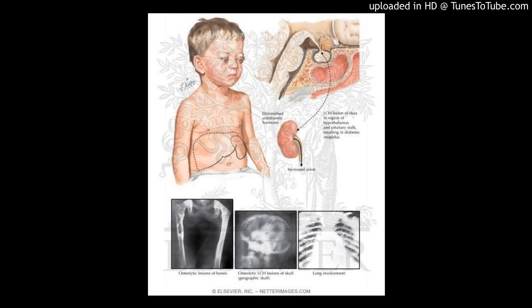LCH may involve a single organ — single-system LCH — which may be a single site (unifocal) or involve multiple sites (multifocal). Or LCH may involve multiple organs — multi-system LCH — which may involve a limited number of organs or be disseminated. Involvement of specific organs such as the liver, spleen, and hematopoietic system separates multi-system LCH into a high-risk group and a low-risk group, where risk indicates the risk of death from disease.